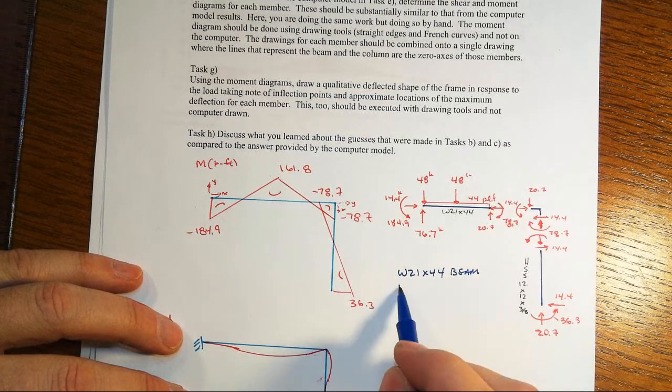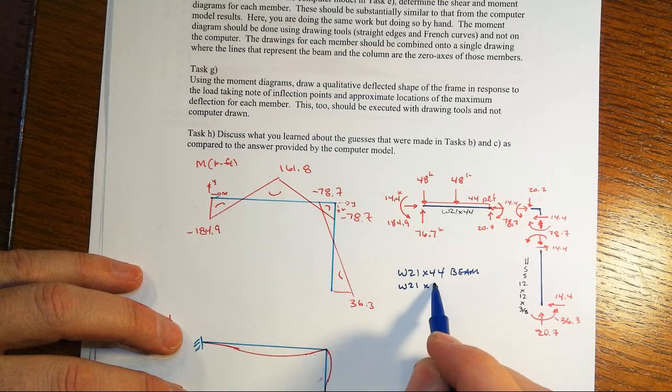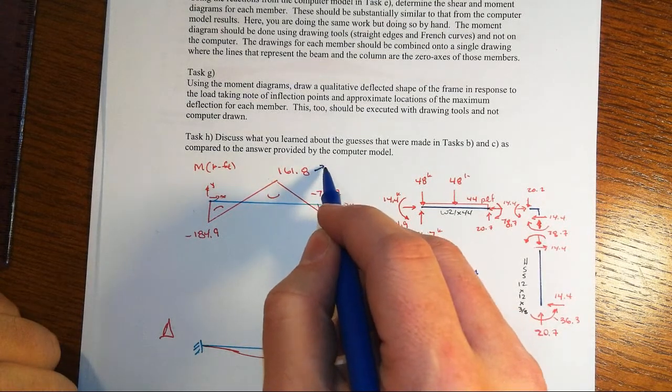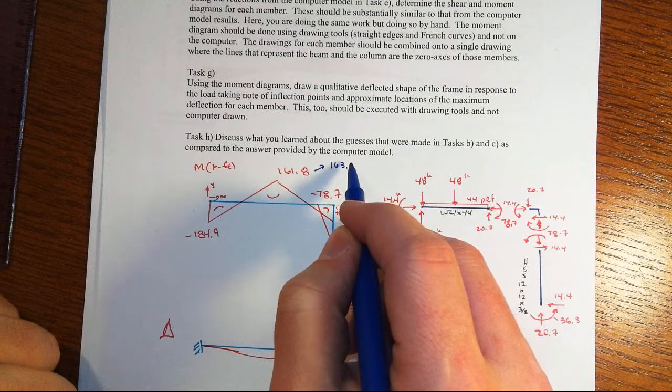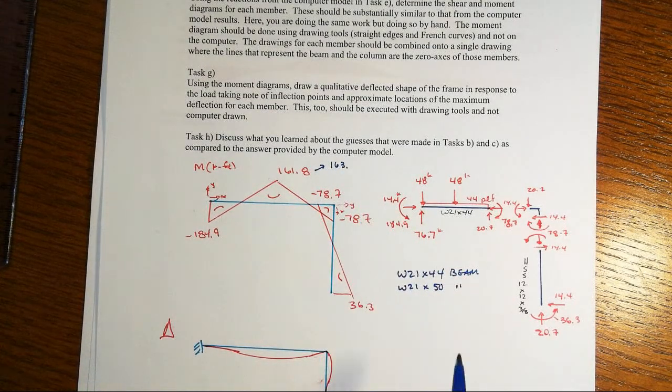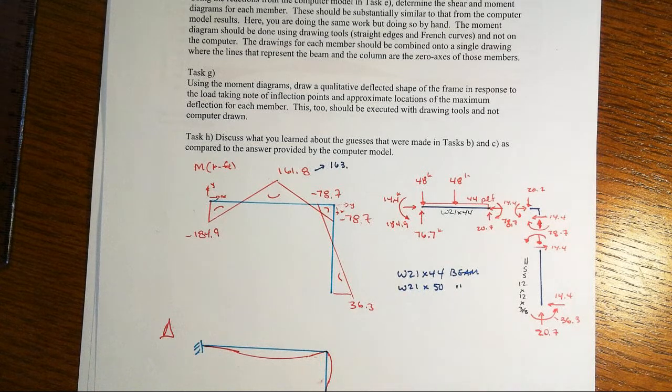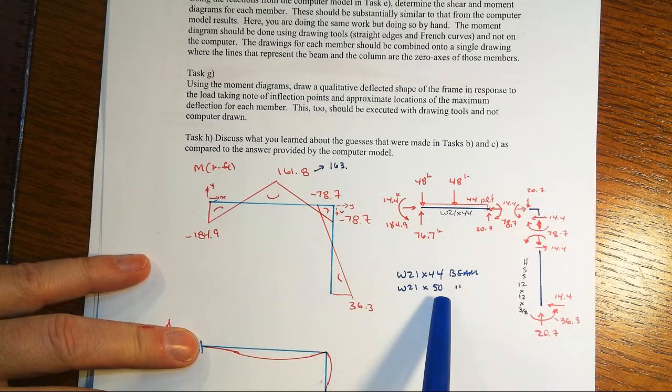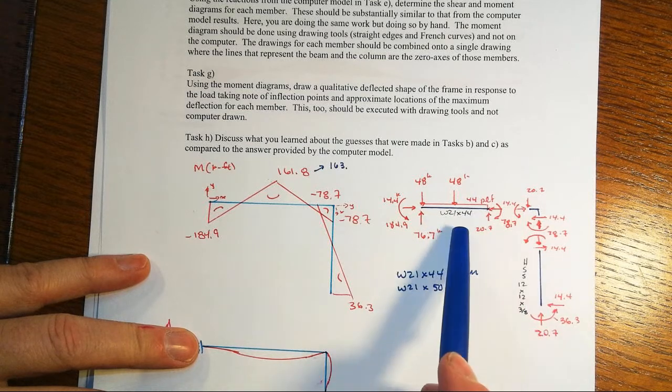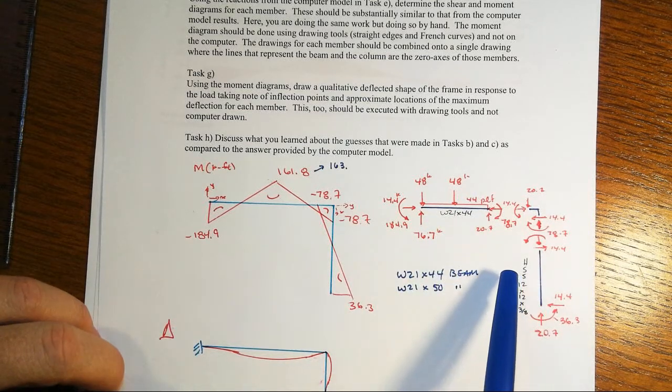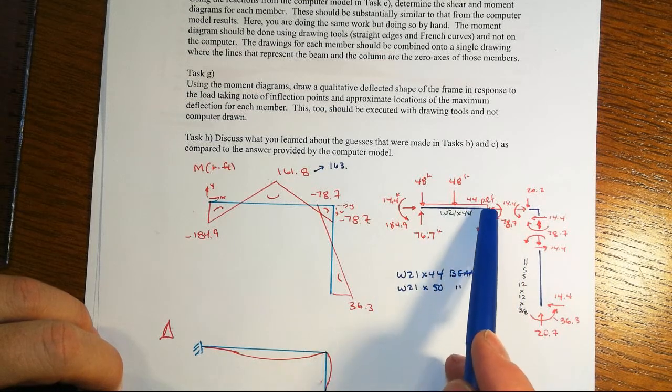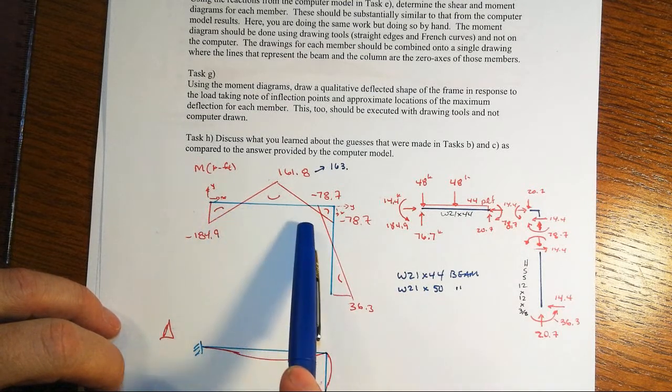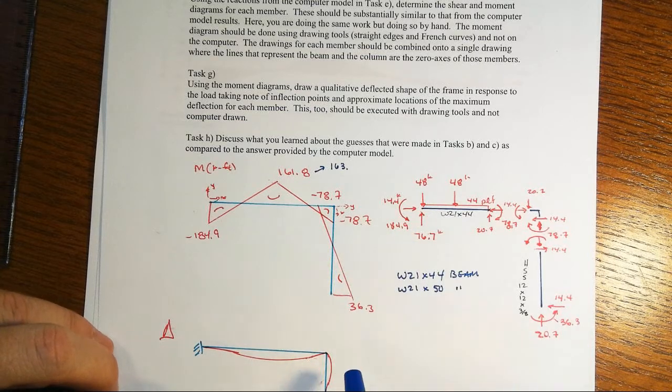And if you were to use say a W21 by 50 for the beam, what you find out is that the 161.8 becomes about a 163 and change. Alright, so there's not a lot of difference but there is a little bit and it's actually kind of surprising that six pounds per foot in the beam makes that much of a difference. It's not so much the added weight, that's a little bit of it. It's that the 21 by 50 is a different stiffness than the 21 by 44. And we're going to find out later in the course how significant it is about the relative stiffness of this beam compared to the column is going to influence this distribution of the moments throughout the system and also the distribution of the other forces as well.